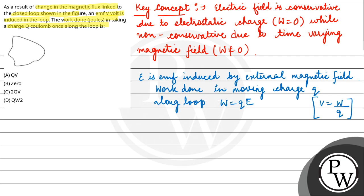So here you have charge given q, and here you have EMF, the EMF is equal to V volt. So work done is equal to q into V. So final answer is option A, QV. Hope you understood it well. Best of luck. Thank you.